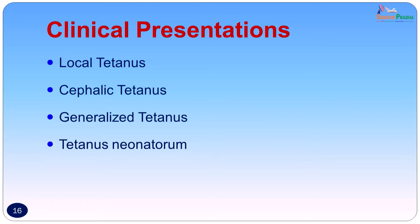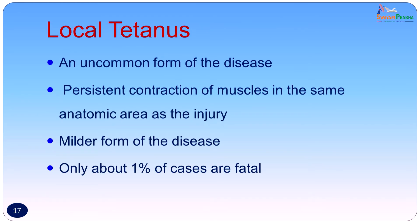The clinical presentation may vary. It can present as local tetanus, which is the mildest form of the disease, cephalic tetanus, generalized tetanus, or tetanus neonatorum. Local tetanus is an uncommon form where persistent contraction of muscles in the same anatomic area as the injury is seen. It is the mildest form — only about 1 percent of cases are fatal — and our patient responded well to treatment and was sent home.